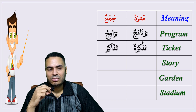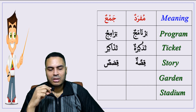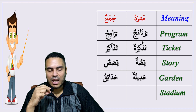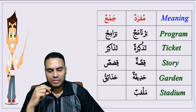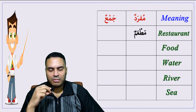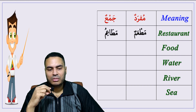Story — qissatun, plural: qisas. Garden — hadiqatun, plural: hada'iq. Stadium — mal'abun, plural: mala'ib. Restaurant — mat'amun, plural: mata'im.